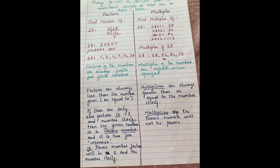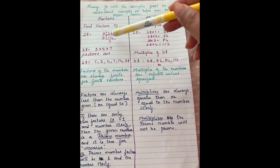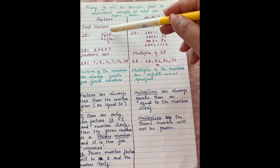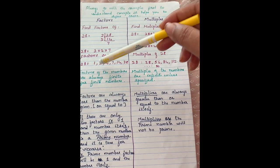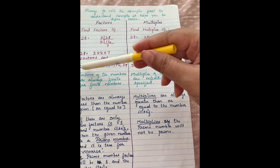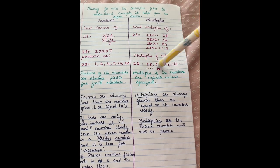Here is an example. I have taken the factors for 28. It is 2 into 2 into 7. I have used the division rule to obtain the factors 1, 2, 4, 7, 14, 28 for the given number 28. Here are the multiples of 28, it is essentially the table for 28.